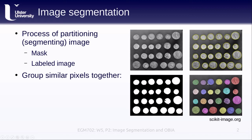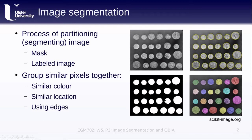Image segmentation helps us to group similar pixels together. We can use, for example, similar colors, similar locations within the image, or even things like the edges of different objects.